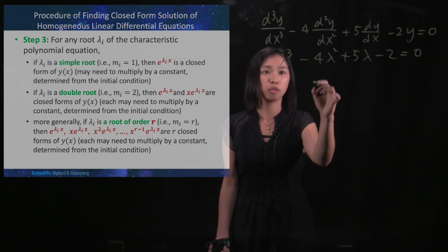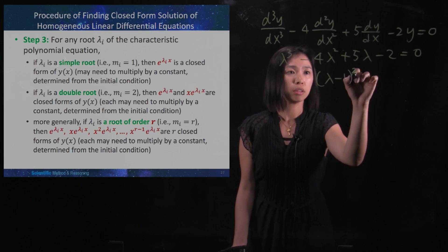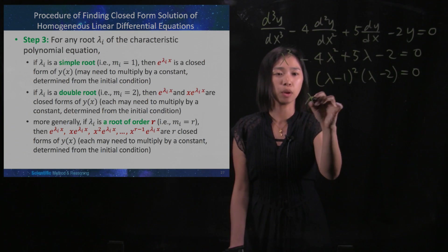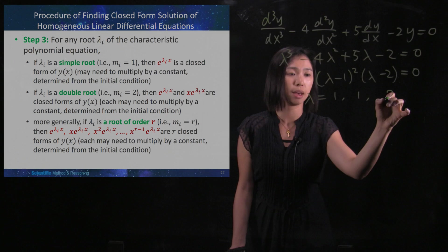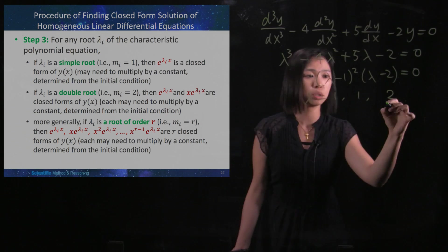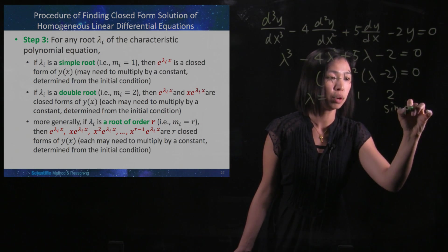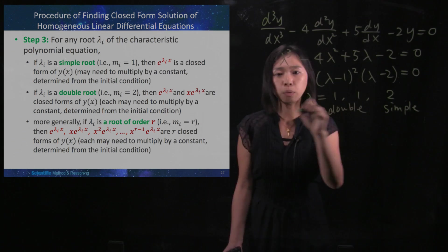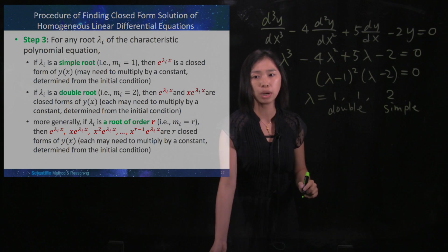And then the next step would be to factorize this characteristic polynomial. I know that λ would be 1, 1 and 2. And then I will call this 2 a simple root, and then these two ones I will call them double root.